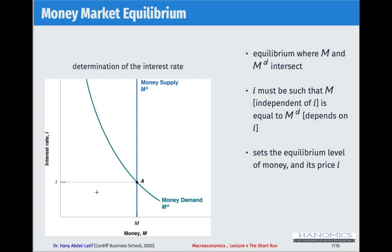There are two reasons the equilibrium interest rate might change: first, if nominal income changes — an increase shifts the Md curve right and a decrease shifts it left; second, if central banks decide to change money supply, shifting the vertical line right or left, which changes the equilibrium interest rate accordingly.